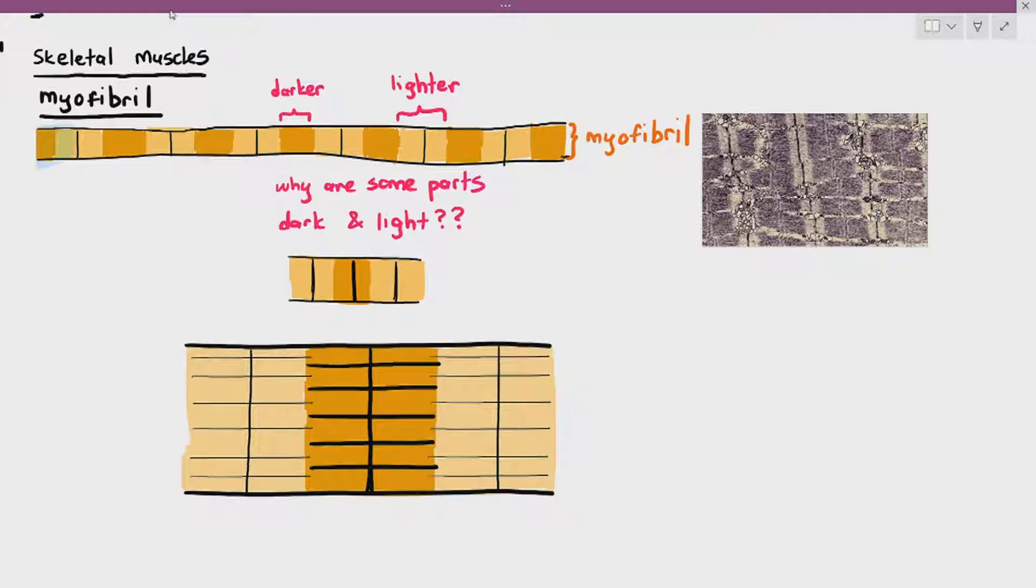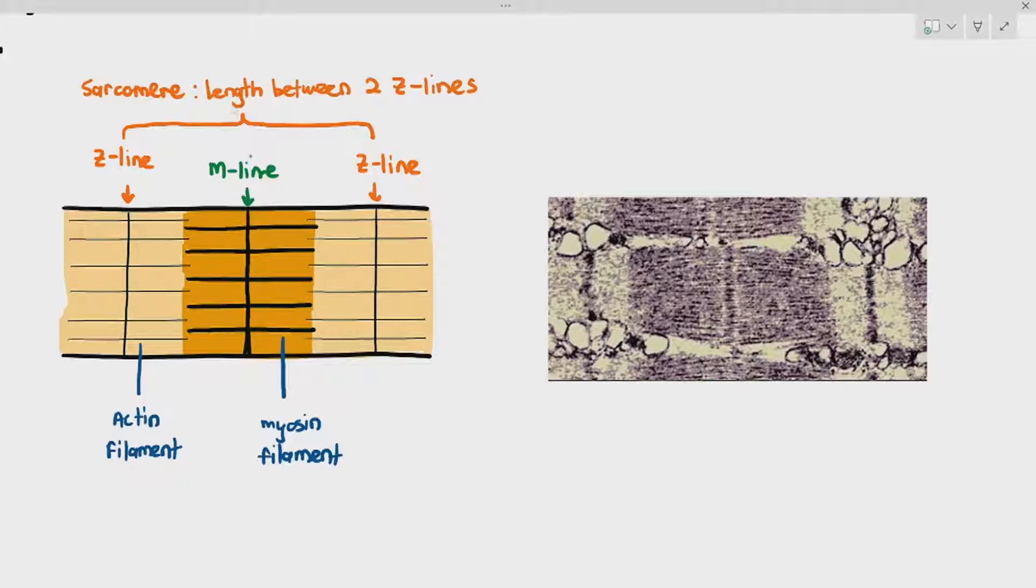I mentioned that the light areas were due to the thin filaments known as actin filament, and myosin filaments were the reasons why it was dark because it was the thicker filament. But what exactly are the actin and myosin filaments made out of?